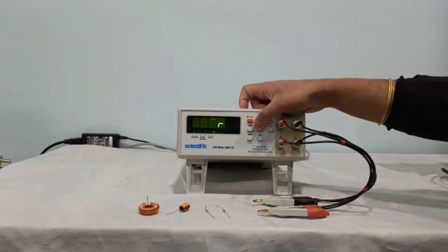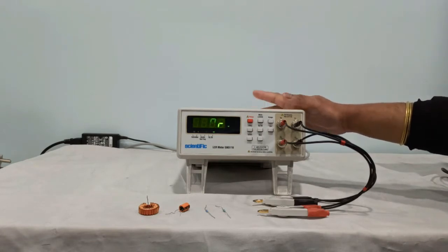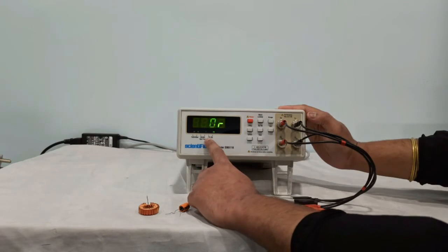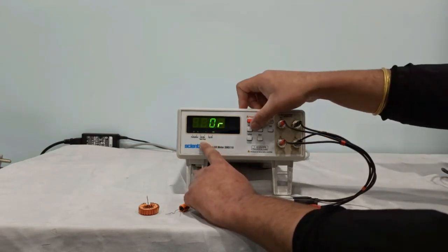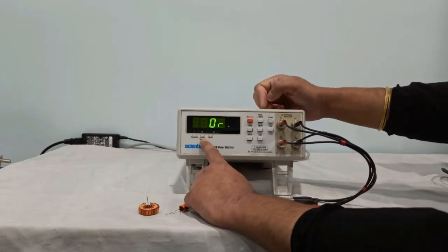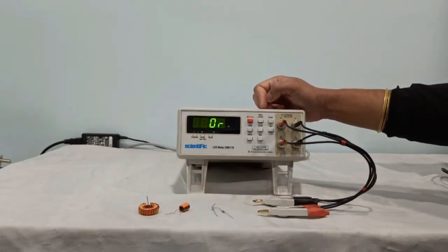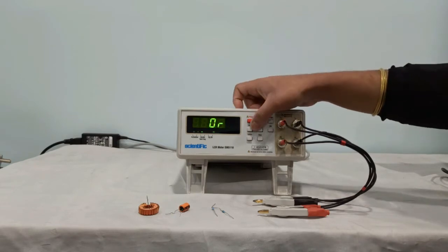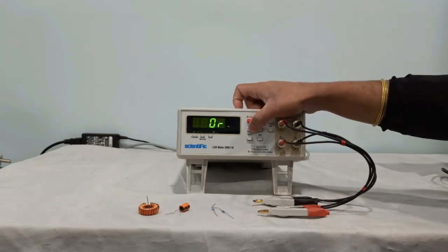Next is frequency. This instrument has two frequencies, 100 Hz and 1 kHz. Right now in the display if you see, one is displayed, so this is 1 kHz. Once you press this frequency switch, now this is 100 Hz. So you can have two test frequencies, 100 Hz and 1 kHz, and you can switch from this switch.